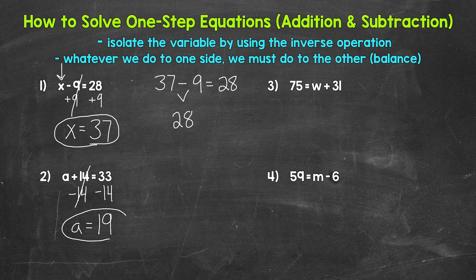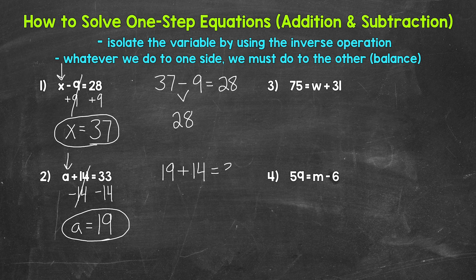So A equals 19, and that's our solution. Let's check it by plugging 19 in for A and see if that works. So 19 plus 14 equals 33. 19 plus 14 is 33, so we are correct. A equals 19.